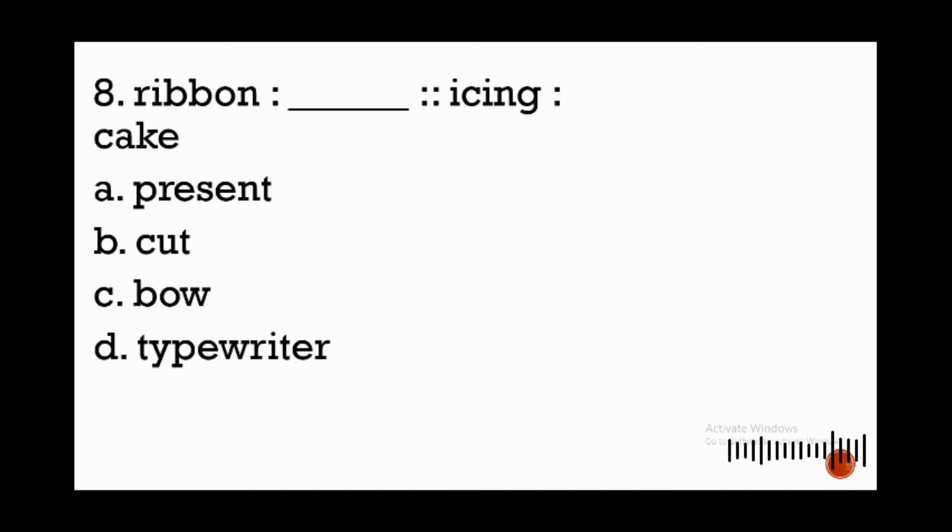Next, number eight: ribbon is to blank as icing is to cake. We use icing to decorate cake. Apply the same relationship to the other pair of words. We use ribbon to decorate what?